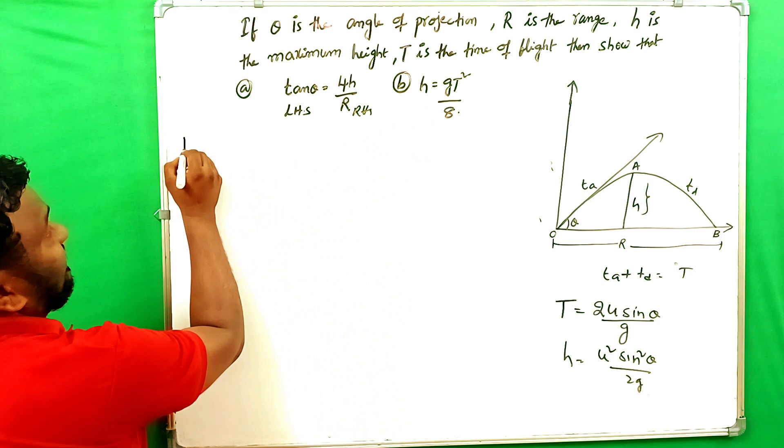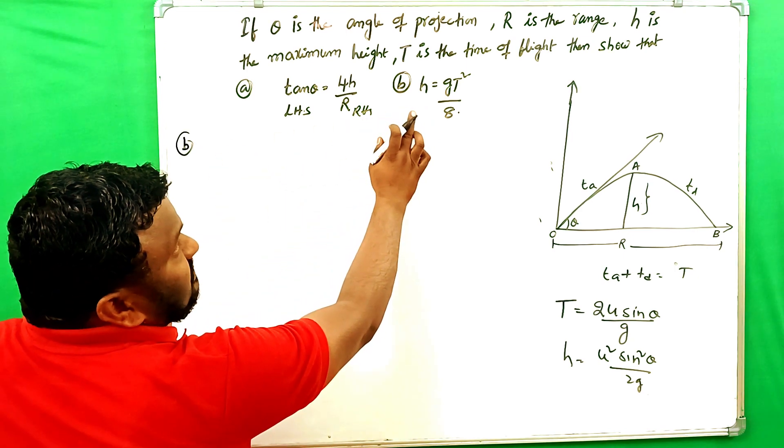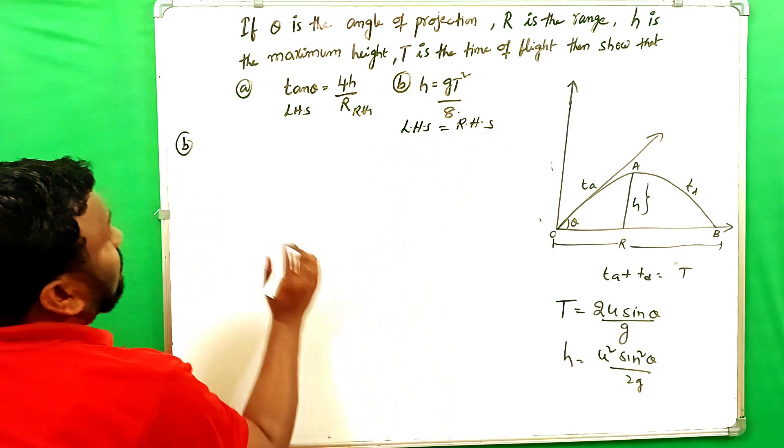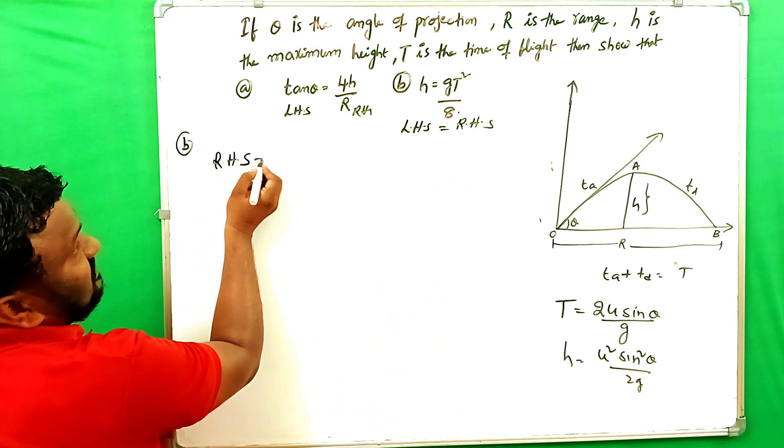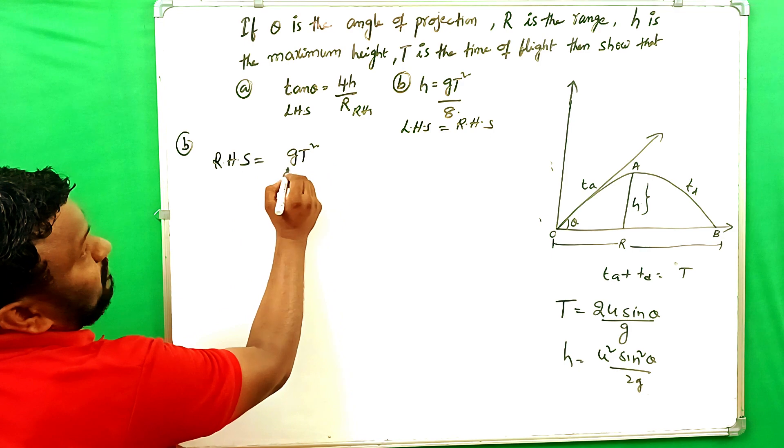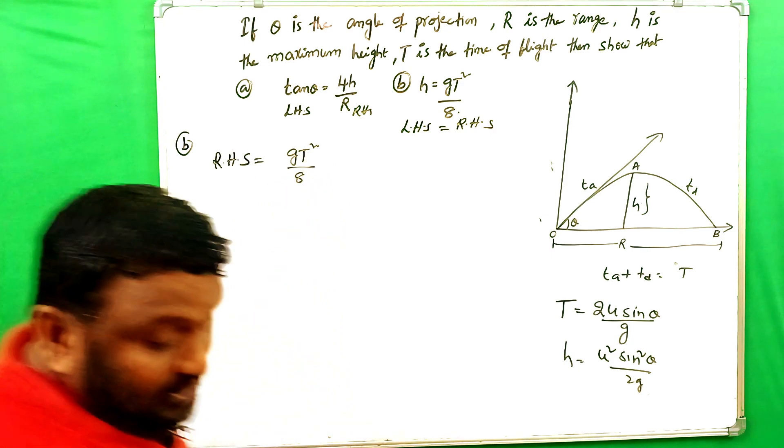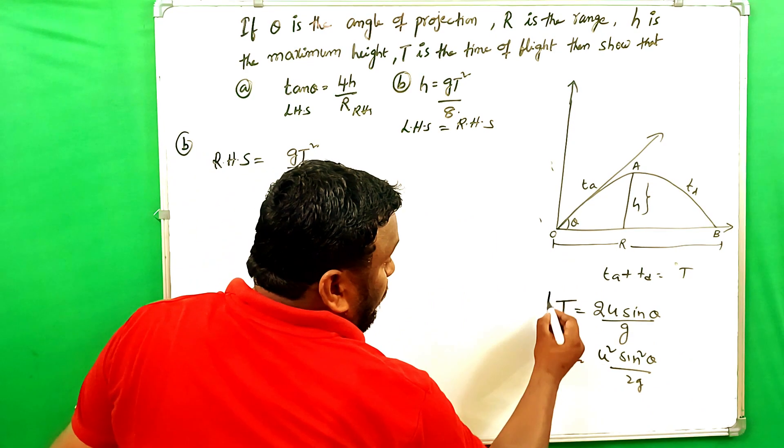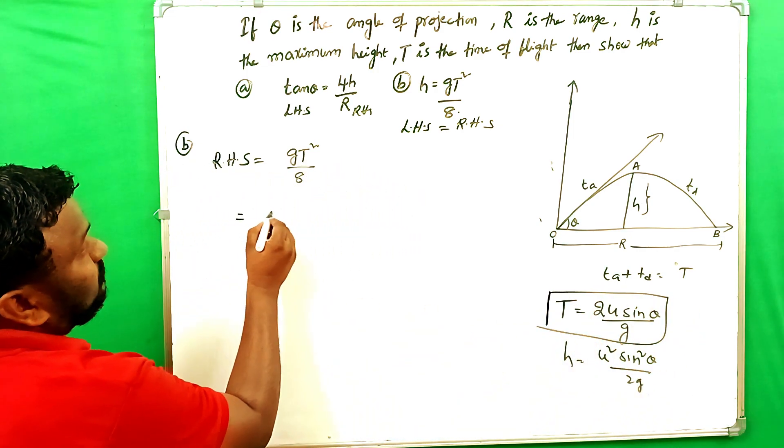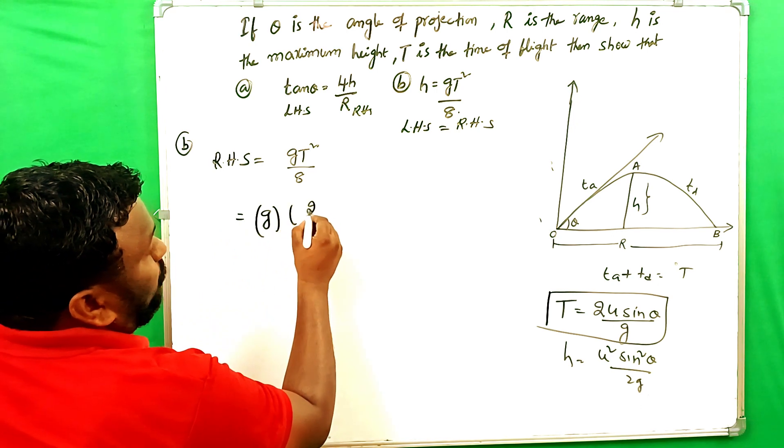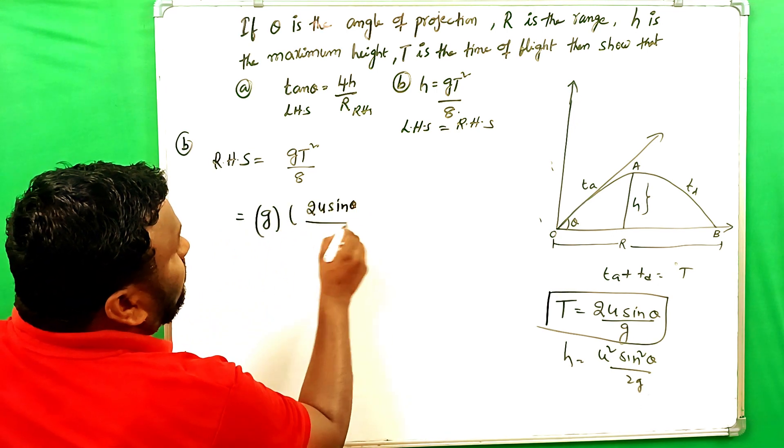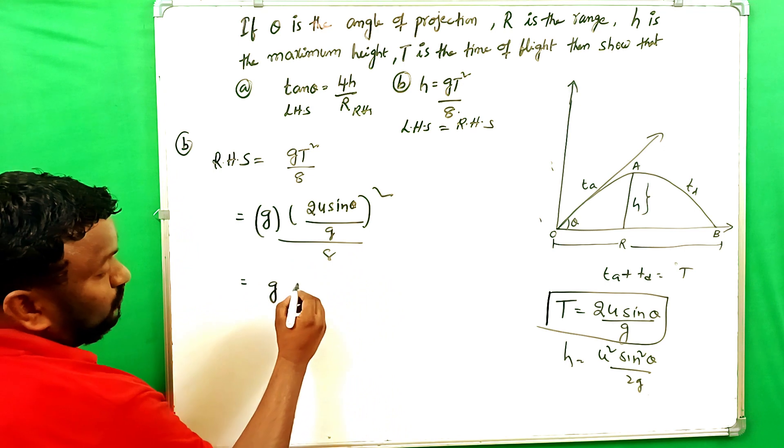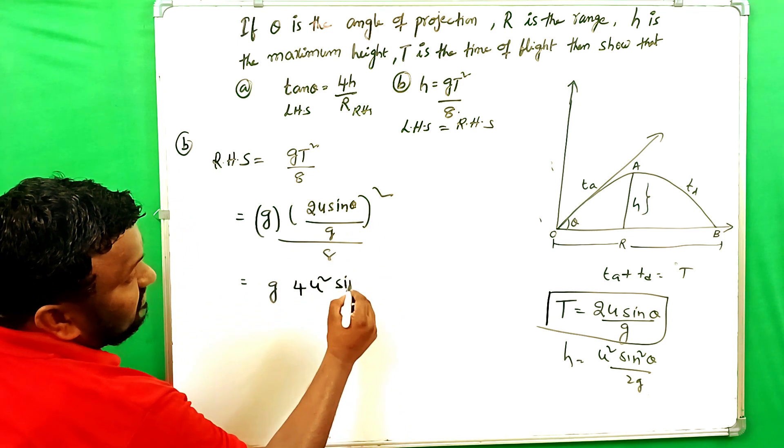Let's see now second one. H is equals to G T square by 8. H is LHS and that should be RHS. First we have to take the RHS. What is it? G into T square by 8. What is T? T is time of flight. G is the acceleration due to gravity. Already T is 2U sine theta by G. So it is G into 2U sine theta by G whole square by 8.